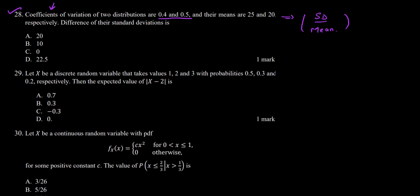We are talking about two distributions, so we will consider them as A and B. We can say that coefficient of variation of A is 0.4, as given in the question, which is Sigma_A (standard deviation) divided by mu_A (mean) = 0.4. For B, Sigma_B divided by mu_B = 0.5.